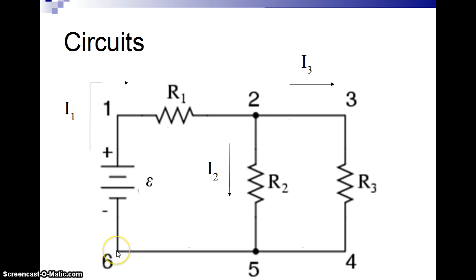Then if we look at the loop rule, I'm going to do one loop that's going from six to one to two to five to six, making that loop. So I'm going with the current each time through the battery and through R1, it's I1. Then when I split up here, it's I2. And then when I get back to the battery, it's I1 again, I1 again.